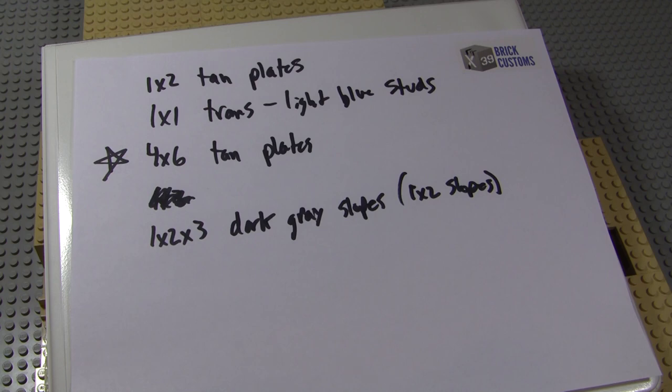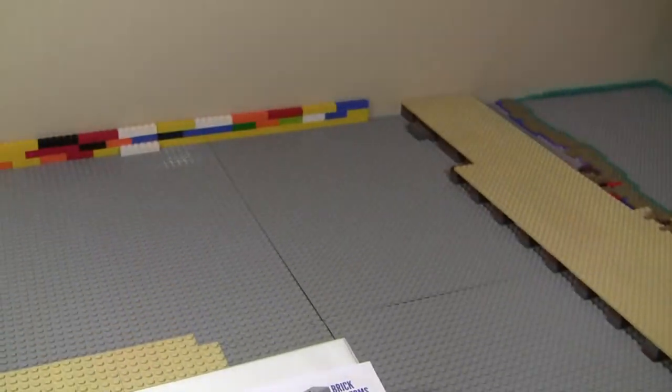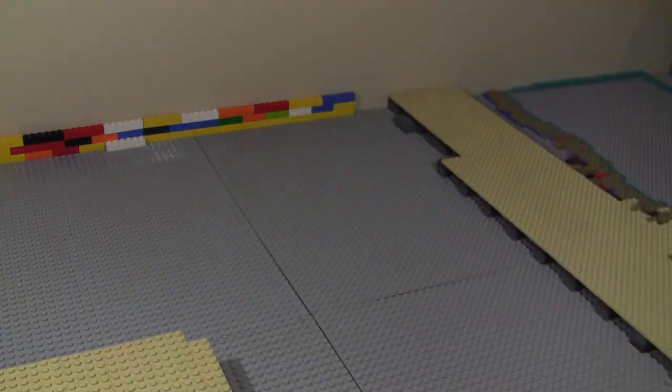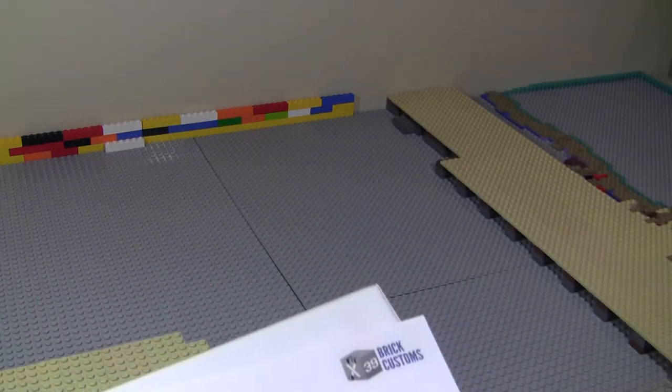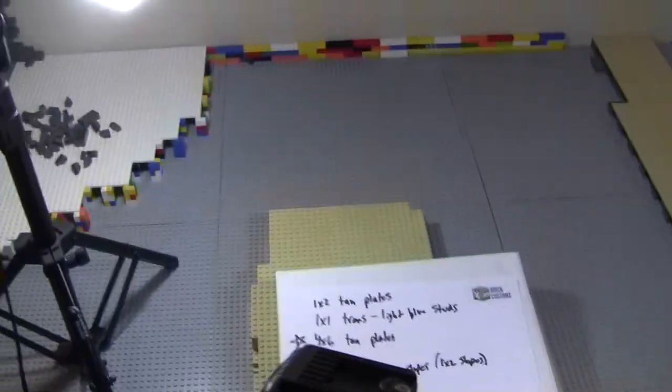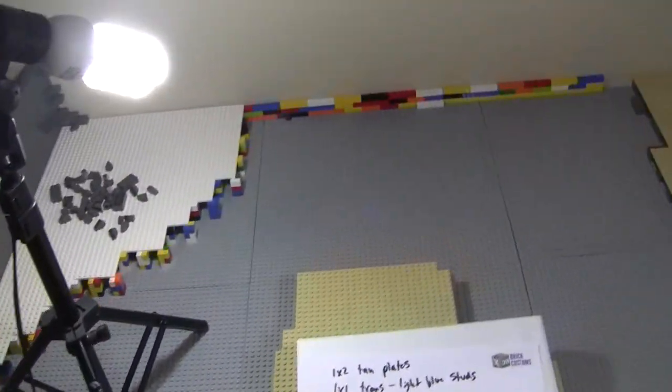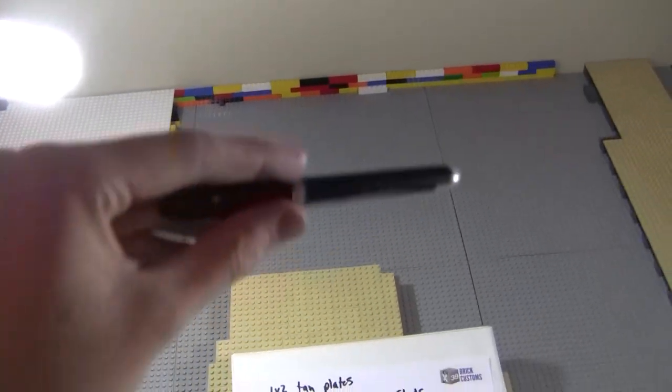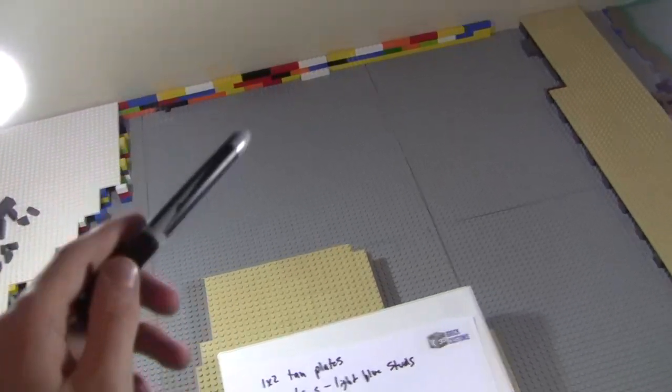So now we're going to go over how we actually estimate how many of these we need. Basically, I'll zoom the camera out and point up here for you guys. Sorry if you hear any background noise. So basically, if we look at our MOC, I'm going to take this off the tripod here. If we look at the MOC, pretty much if you see gray, it needs to be covered in tan one way or another.